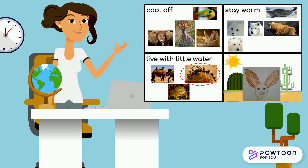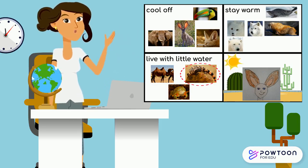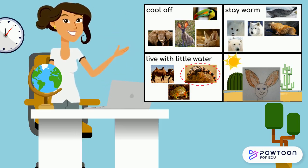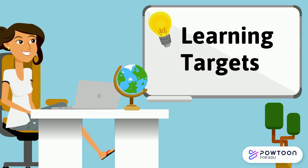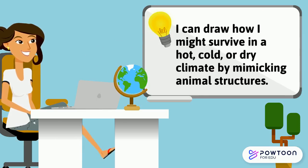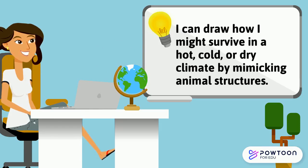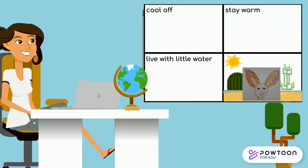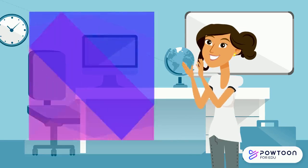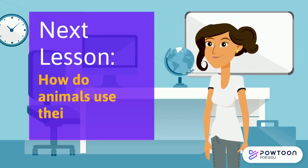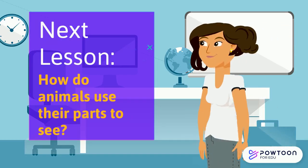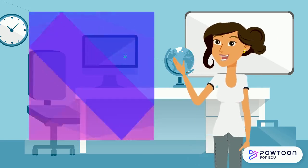Great! Before our next lesson, please use your sketches to tell someone about the function of the animal part that you just circled. Our next learning target was: I can draw how I might survive in a hot, cold, or dry climate by mimicking animal structures. What animal structure did you mimic or copy in your drawing? Be sure to share your drawing with someone and explain what part you mimicked and why. You've done a great job today! In our next lesson, you'll learn about structures that help animals to see, and there are some wacky parts to learn about. I'll see you soon!